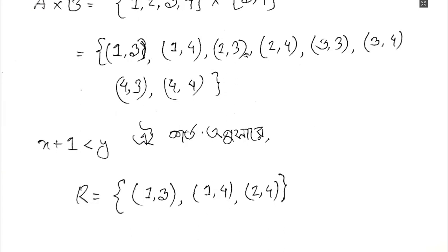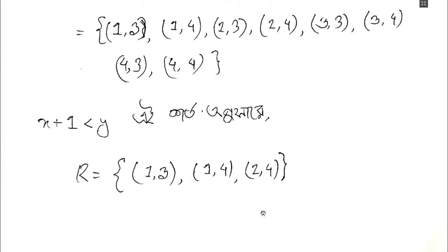For (3,3): 3+1=4, not less than 3. For (3,4): 3+1=4, not less than 4. For (4,3) and (4,4): 4+1=5, not less than 3 or 4. So the valid pairs in the relation are (1,3), (1,4), and (2,4). This is the final relation.